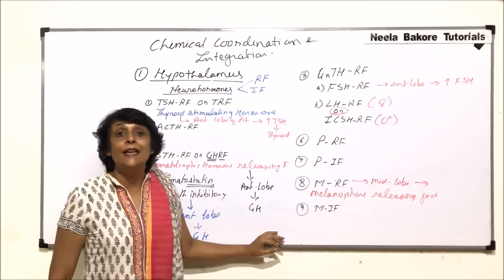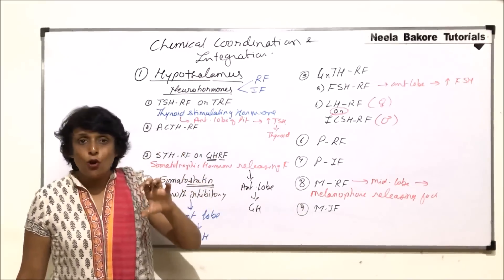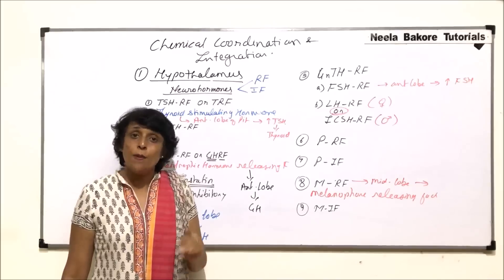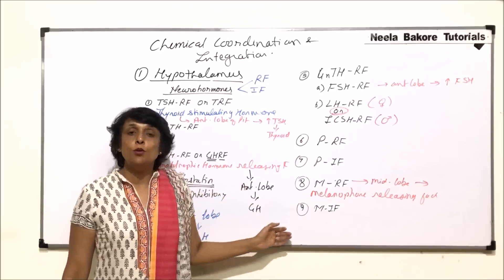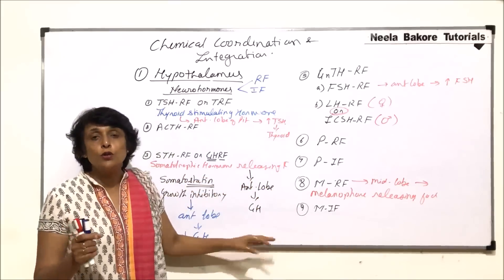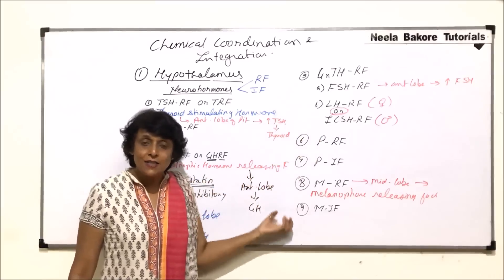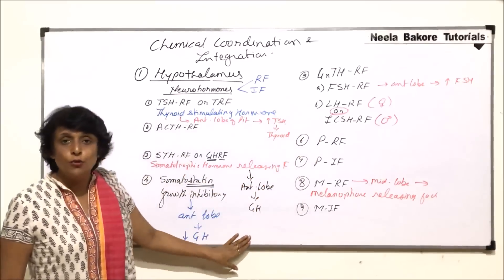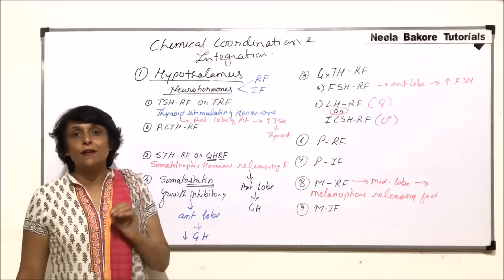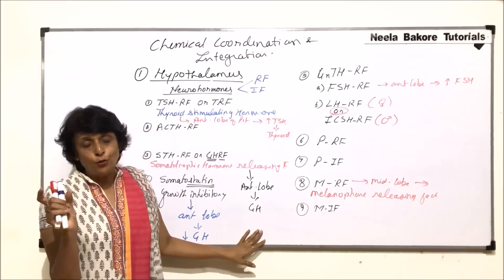Note that oxytocin and ADH are not included in this list of hypothalamic neurohormones because they are direct hormones synthesized by the hypothalamus but secreted from the posterior lobe of the pituitary. When we discuss the posterior lobe, we will list oxytocin and ADH there. Here we are listing hormones by where they are secreted, not where they are synthesized.